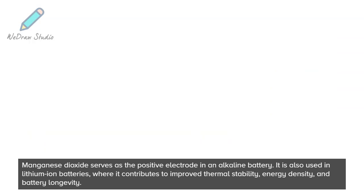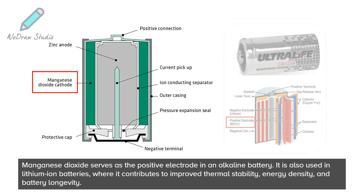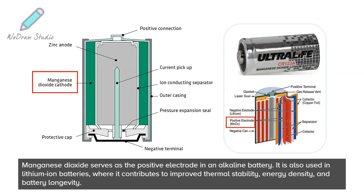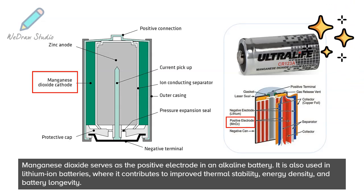Manganese dioxide serves as the positive electrode in an alkaline battery. It is also used in lithium-ion batteries, where it contributes to improved thermal stability, energy density, and battery longevity.